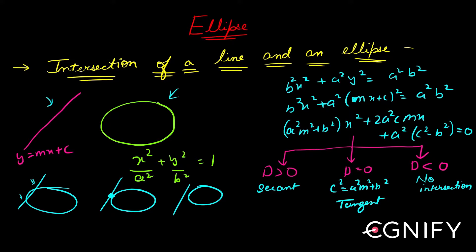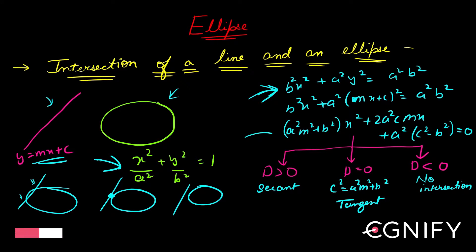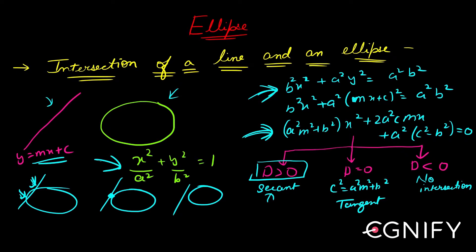For all three cases, we substitute y = mx + c into the ellipse equation. After rearrangement, we get a quadratic in x. If the line intersects in two different points, the roots of this quadratic will be distinct real roots, so the discriminant should be greater than zero — that gives the condition for a secant.